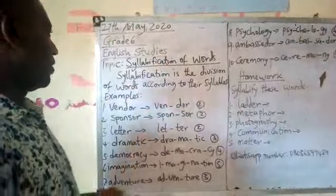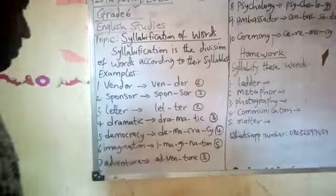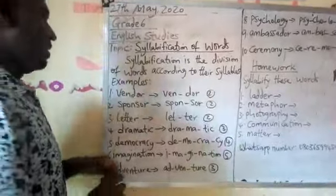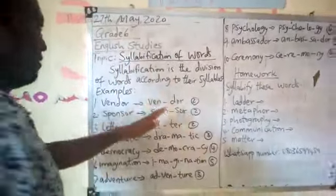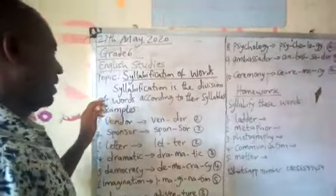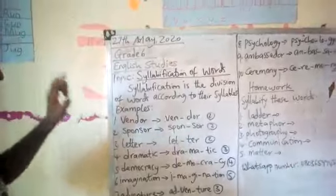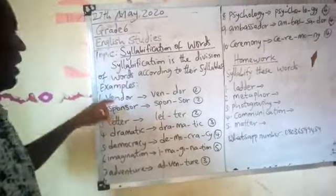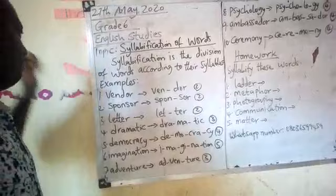Today we are going to syllabify words. From these examples we have on the board, we can select five words. Example number one: